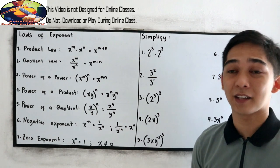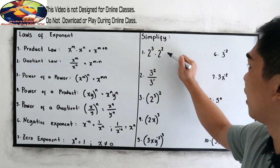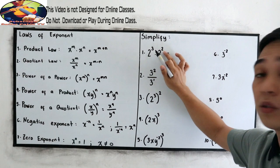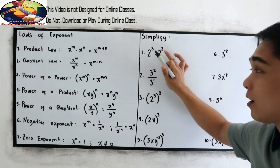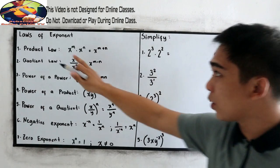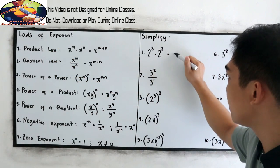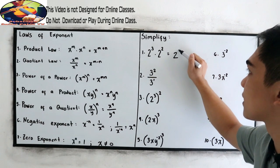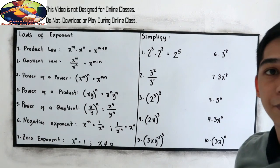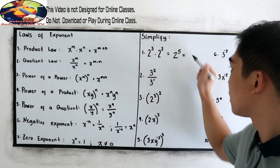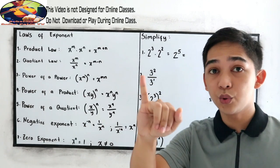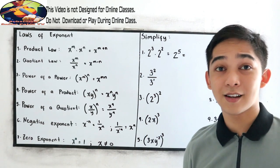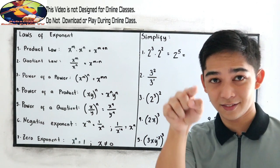Let's check. Number 1: 2 cubed times 2 squared. Our base is 2, so we apply the product law — copy the base and add the exponents: 3 plus 2 equals 5, giving 2 raised to 5. Simplifying: 2 × 2 × 2 × 2 × 2 equals 32.